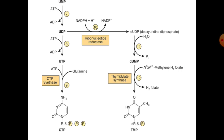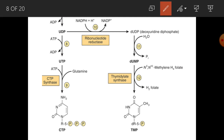From UDP we proceed to UTP. Notably, UTP is acted upon directly by CTP synthase and we get CTP — cytidine triphosphate — directly. This is peculiar because we do not go through CMP or CDP; we get CTP directly from UTP.